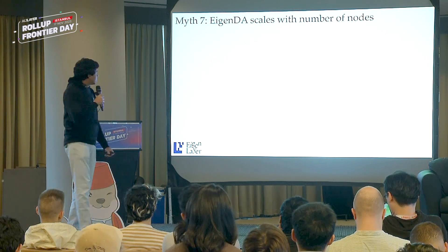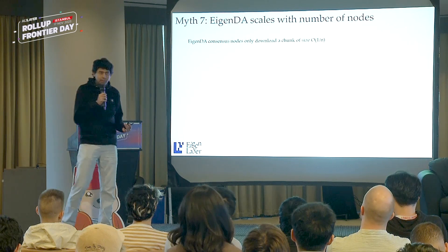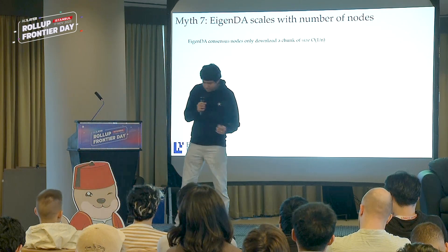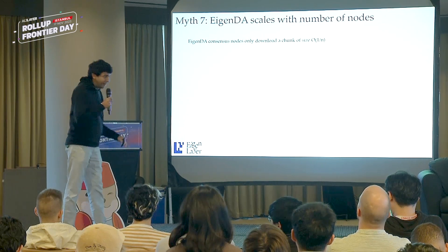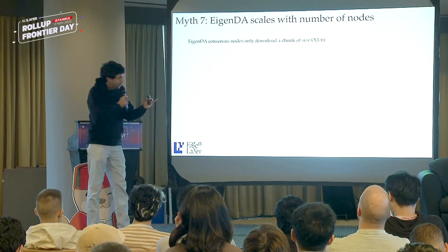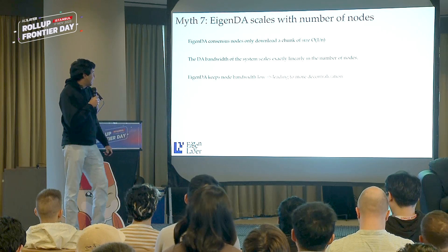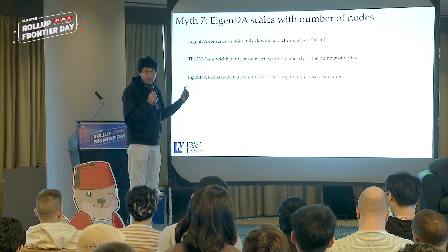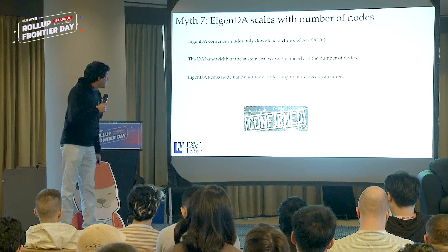Myth seven: EigenDA scales with the number of nodes. Data availability sampling itself doesn't help scale. What helps scale network performance is making sure each node's footprint is very low — and that's exactly what happens in EigenDA. Every node only downloads a little bit of the data, so the total DA bandwidth of the system scales linearly with the number of nodes. EigenDA keeps node bandwidth low, allowing greater decentralization in the trust model.